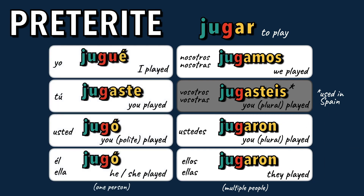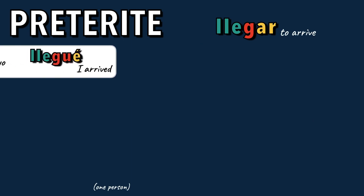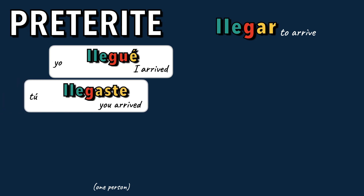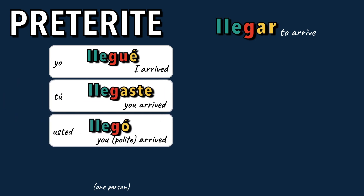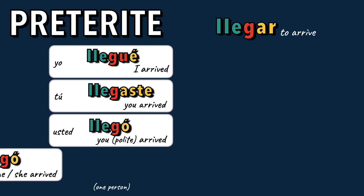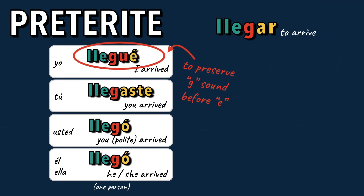Now let's see how the verb llegar will change in the preterite to say different people arrived. Again, notice there's a change in the yo form from G to GU before E to preserve the hard G sound.